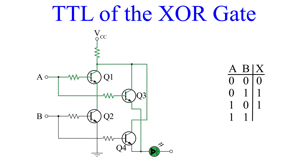For inputs A and B both equal to 1, we turn B back on. All four transistors are now properly biased. However, Q1 and Q2 provide what is basically a short to ground. So with the current flowing through these transistors straight to ground, there's no current to turn on our output LED. With inputs A and B both equal to 1, the output is 0.